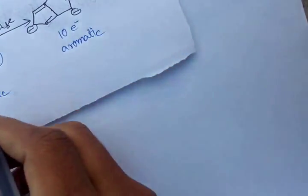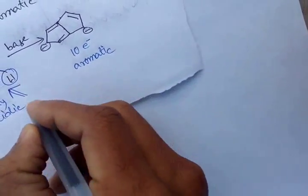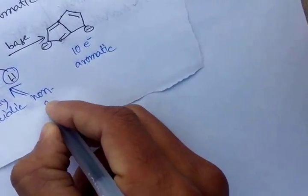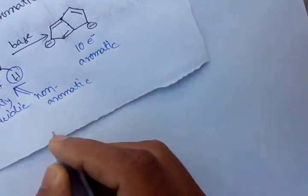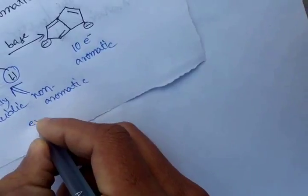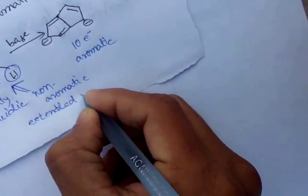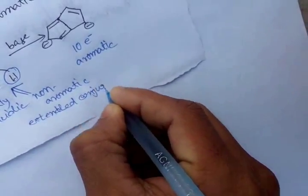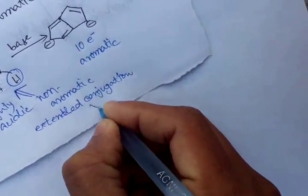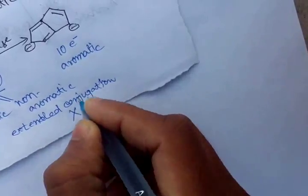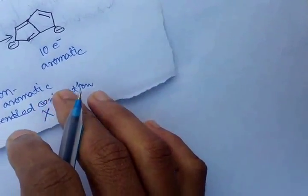However, another compound is actually non-aromatic because it has no extended conjugation. Without extended conjugation, it cannot be classified as aromatic or anti-aromatic — it is non-aromatic.